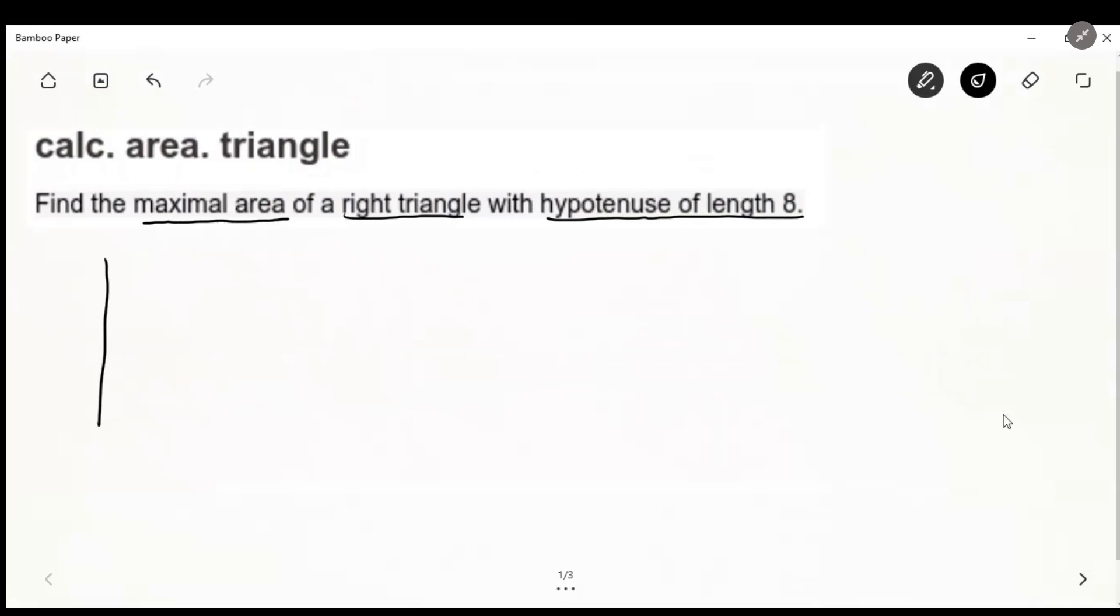So first let's just draw out a right triangle. It's always good to get a visual of what we're dealing with. So it's a right triangle, hypotenuse is 8, and we want to find the maximum area.